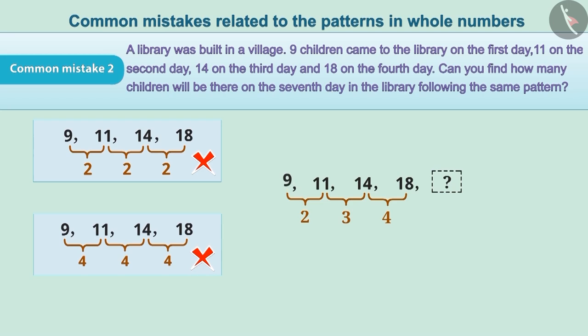Here, the numbers 9, 11, 14, 18 make a pattern. To know the pattern, let's find the relation between the nearest numbers.